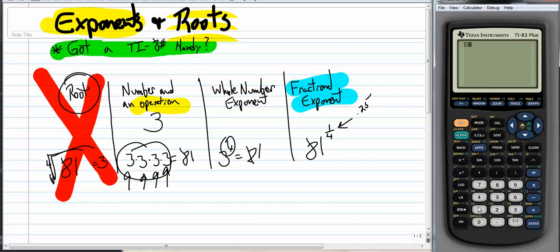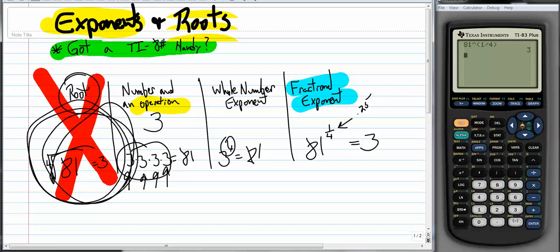Let's go 81 to the... And so I don't confuse the calculator. I'm going to put my 1/4th in parentheses. 1 divided by 4. So 81 to the 1/4th power is 3. So I got the same thing I got over here, except I didn't use the radical thing to do it. I just used a fractional exponent.